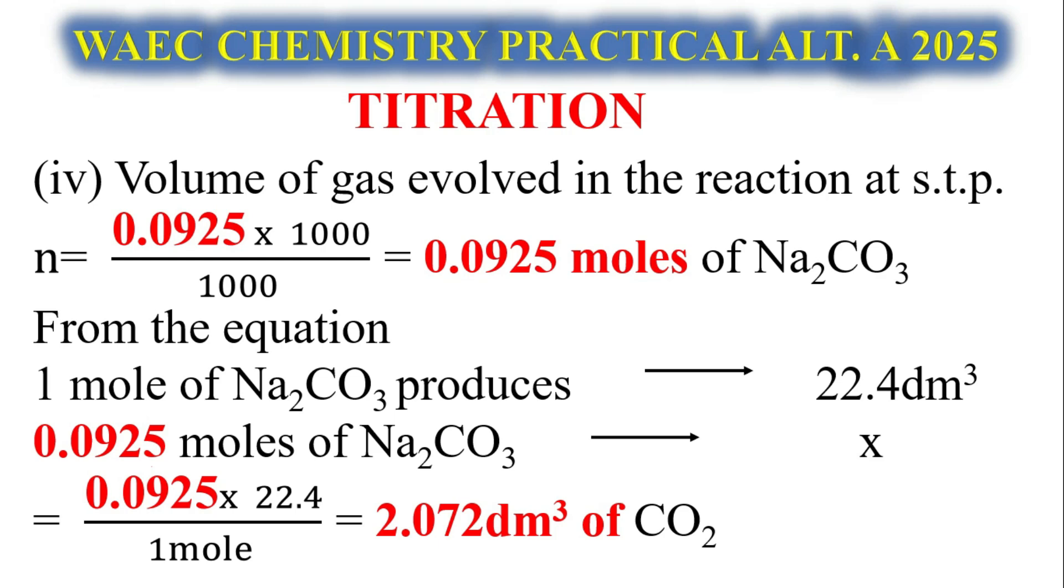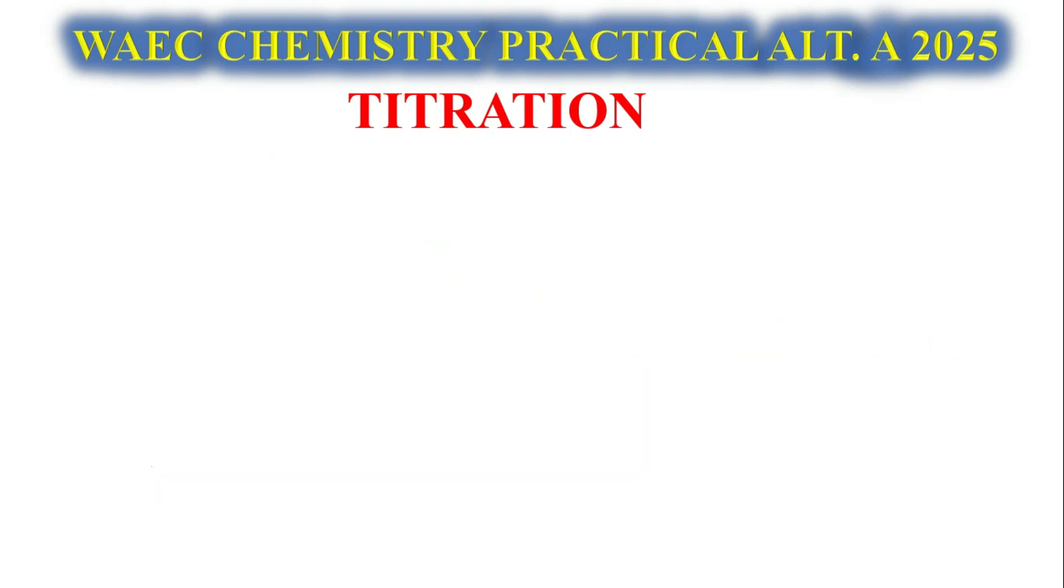Question number 4: Calculate the volume of gas evolved in the reaction. I decided to use N = CV/1000. We have to convert my concentration of B to ordinary moles so I can relate it to my balanced chemical equation. From the balanced chemical equation, 1 mole of Na2CO3 produces 22.4 dm³ of CO2 gas. So 0.00232 moles of Na2CO3 produces X. Cross-multiply, you get 2.07 dm³ of the gas evolved.